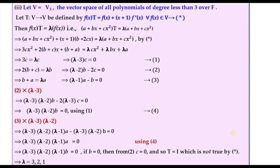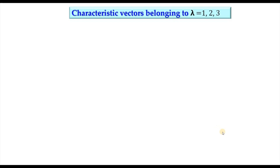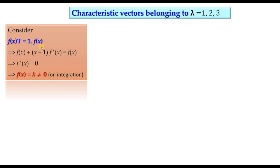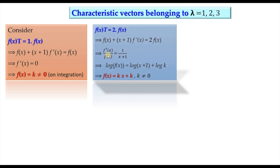To find characteristic vectors for each root: for λ = 1, vT = 1·v gives f(x) + (x+1)f'(x) = f(x), so f'(x) = 0, and integrating gives f(x) = a nonzero constant. For λ = 2, simplifying yields f'(x)/f(x) = 1/(x+1), and integrating gives log f(x) = log(x+1) + log k.